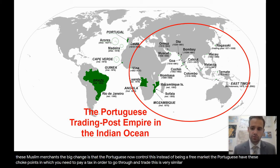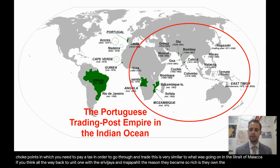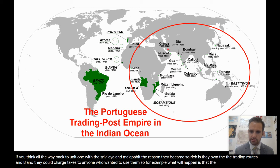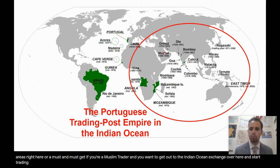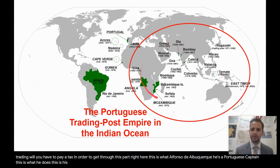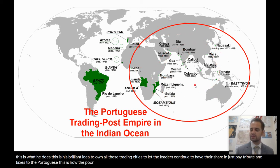This is similar to what was going on in the Strait of Malacca — back in unit one, the Srivijaya and Majapahit became rich by owning the trading routes and charging taxes to anyone who used them. The Portuguese hold cities like Ormuz and Muscat. If you're a Muslim trader wanting to reach the Indian Ocean Exchange, you must pay a tax to pass through. This was the brilliant idea of Alfonso de Albuquerque, a Portuguese captain — own all these trading cities, let the local leaders keep their share, and have them pay tribute and taxes to the Portuguese. This is how the Portuguese gained a great deal of wealth.